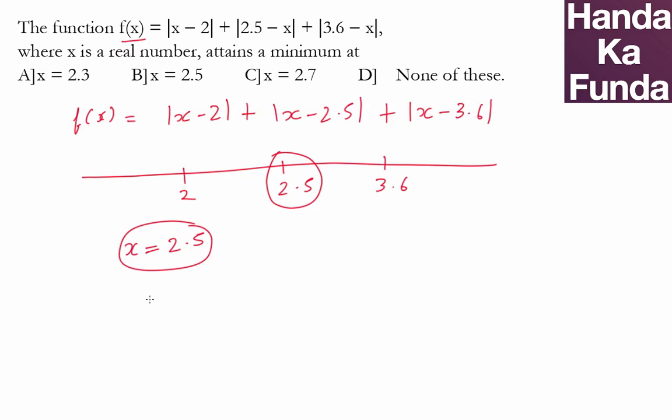Let's say if you had five values. Let me have a function which is |x - 1| + |x - 3| + |x - 7| + |x - 9| + |x - 100|.